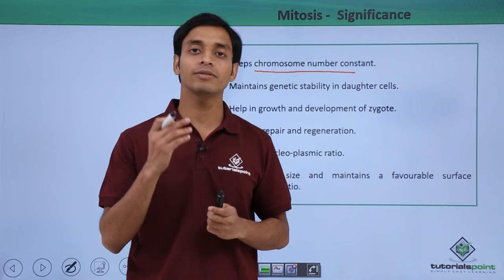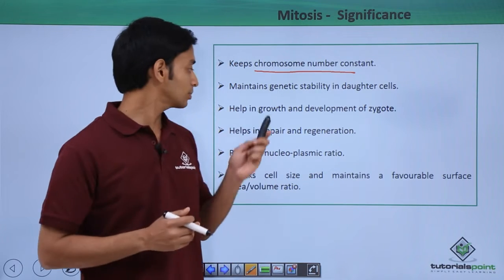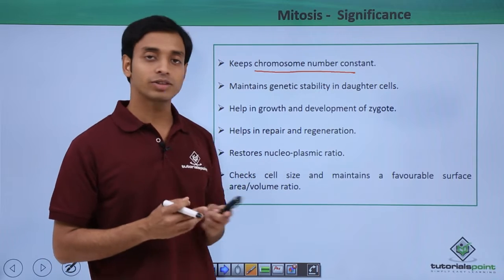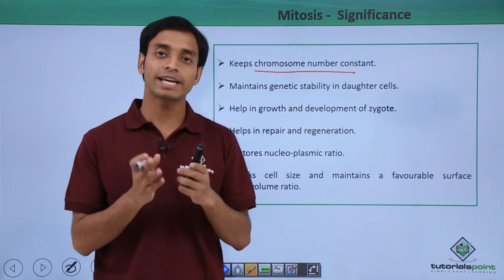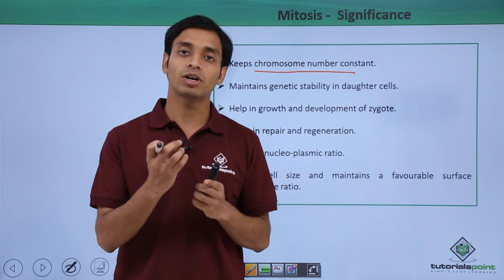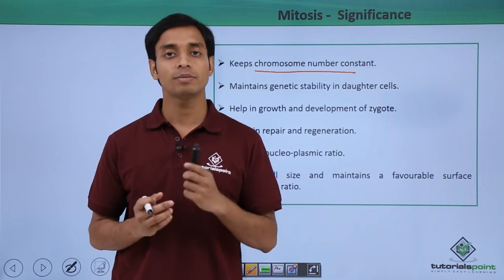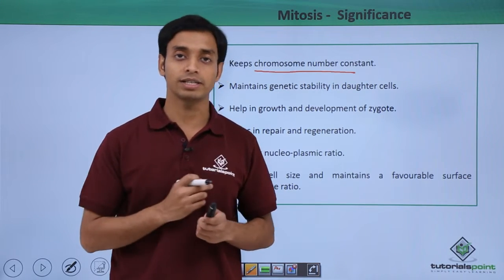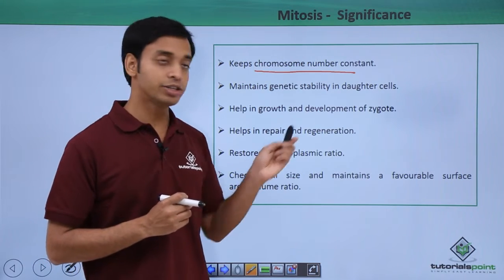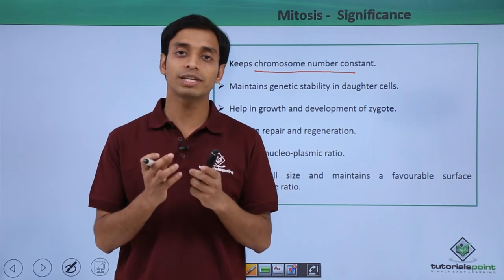Through mitosis, genetic stability is maintained in the daughter cells formed by cell division. This also helps in the growth and development of the zygote — the zygote multiplies and the number of cells increases by the simple process of mitosis.